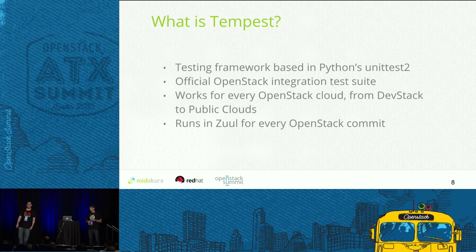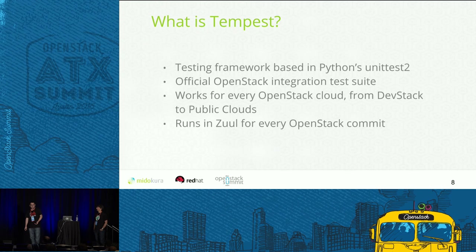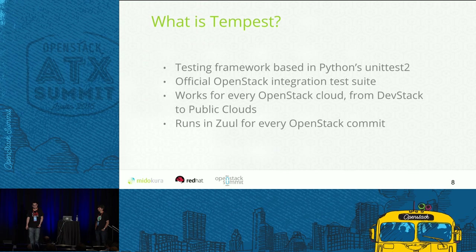OpenStack is a really big project — everybody knows what Nova, Neutron, Cinder are. But maybe you're not aware of Tempest unless you are testing the cloud or doing some commits. Tempest is the integration and testing framework for OpenStack, originally based on the Python unit test framework. The idea is that it would be used like black box testing, from a single DevStack to production clouds. If you've ever done any commit to OpenStack, you've already used Tempest, because it's used in Zuul for every OpenStack commit — in fact, it's used several times as it passes through many gates.